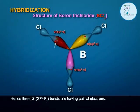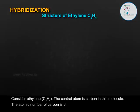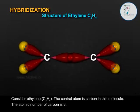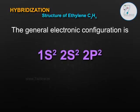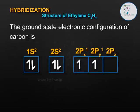Consider ethylene, C2H4, also written as H2C=CH2. The central atom is carbon. The atomic number of carbon is 6. The general and ground state electronic configuration of carbon is 1s2, 2s2, 2p2.